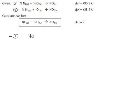That is NO converts to half a nitrogen and half an oxygen. And when we do that, we get the reversed delta H. When you flip a reaction, you also flip its delta H. So now this is minus 90.5.